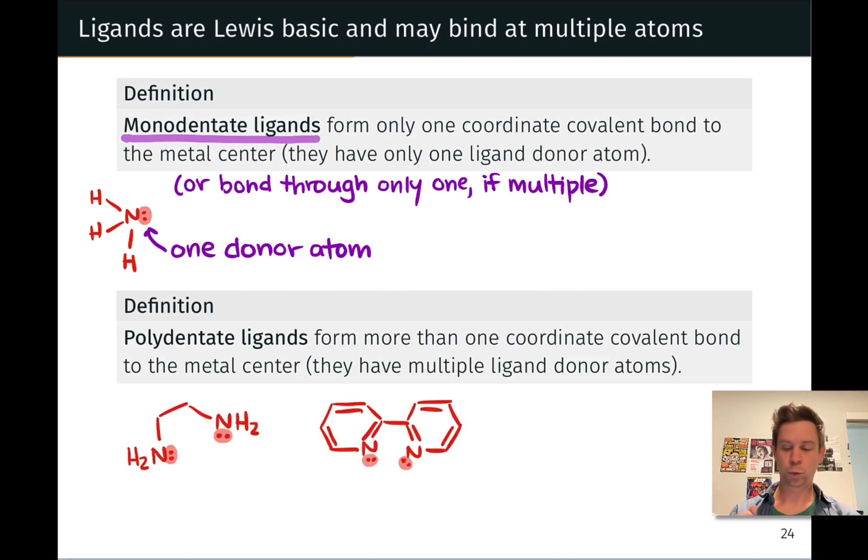Polydentate ligands form more than one coordinate covalent bond, and these have multiple ligand donor atoms, multiple atoms bearing lone pairs that can be donated to a single metal center simultaneously. And here again, the idea of polydentate evokes the mental image of multiple teeth binding down onto a metal center at the same time.